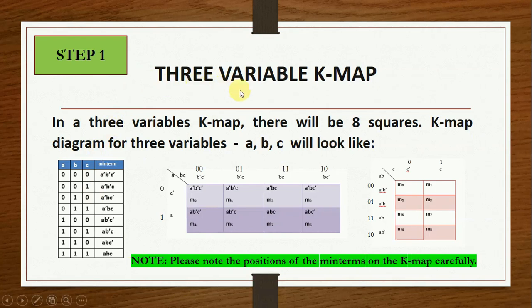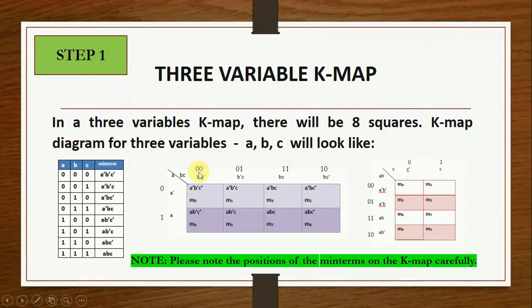In a 3-variable KMAP there will be 8 squares. Each minterm of the truth table should correspond to the KMAP. The variables are A, B, C, with 0 for A-bar and 1 for A. Very important to note: the column order is 00, 01, 11, 10 — this binary code is called Gray code, where each successive number differs in only one bit.